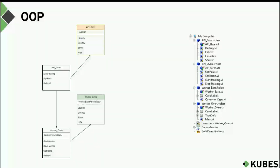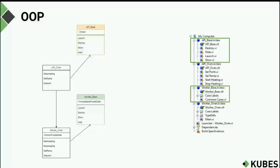In the project view, we have a base class for the API implementing the API commands, the worker base consisting of a class file, some case labels, and a common case VI. For the inherited classes, it's just the additional methods needed, and on the worker side we have the main VI and some additional commands on that worker. It's a manageable number of VIs that form a clean modular structure.